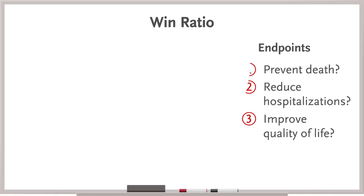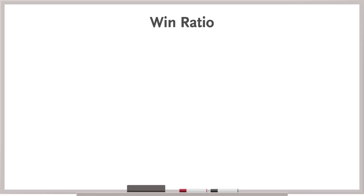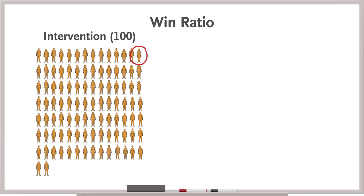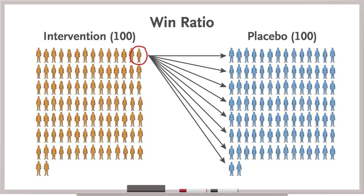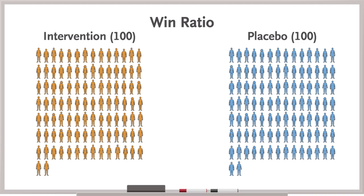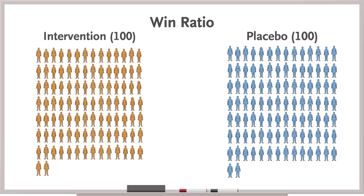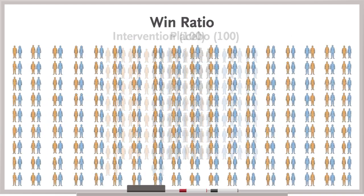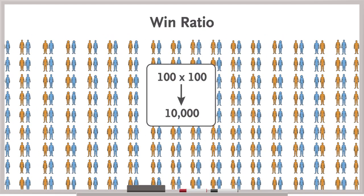In a win-ratio analysis, every participant in the intervention arm is compared with every participant in the placebo arm. So in your trial, if there are 100 people in the new medication arm and 100 in the placebo arm, that makes 100 times 100, or 10,000 comparison pairs.